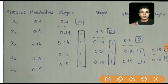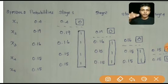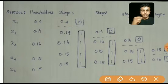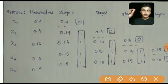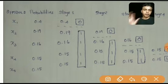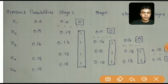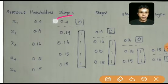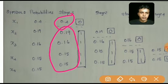We divide in such a way that the sum of probabilities in the upper part should be the same as the sum in the lower part. If equal sums are not possible, the sum of probabilities in the upper part should be slightly smaller than the sum in the lower part. This is how we proceed in Stage 1.